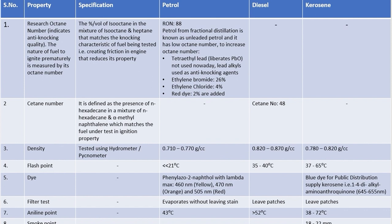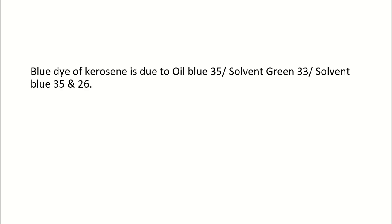Filter test: when a few drops of these petroleum products are placed on filter paper, petrol evaporates without leaving a stain, while diesel and kerosene leave patches. Aniline point of petrol is 43°C, diesel less than 52°C, and kerosene 38–72°C. The smoke point of kerosene is 18–22 mm. The blue dye of kerosene is due to oil blue 35, solvent green 33, solvent blue 35 and 26, with the active component 1,4-dialkylamino-anthraquinone.